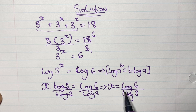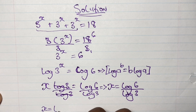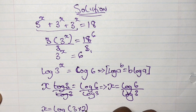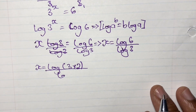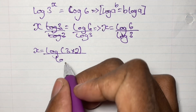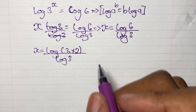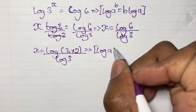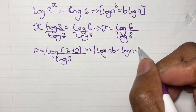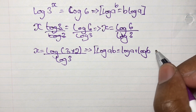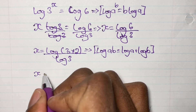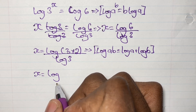So we said that x is equal to log 6 over log 3. We can actually simplify log 6 as the log of 3 times 2, over log 3. Now we can apply another log rule: the log of a times b is equal to log a plus log b. So applying this rule, we will have x is equal to log 3 plus log 2, all over log 3.